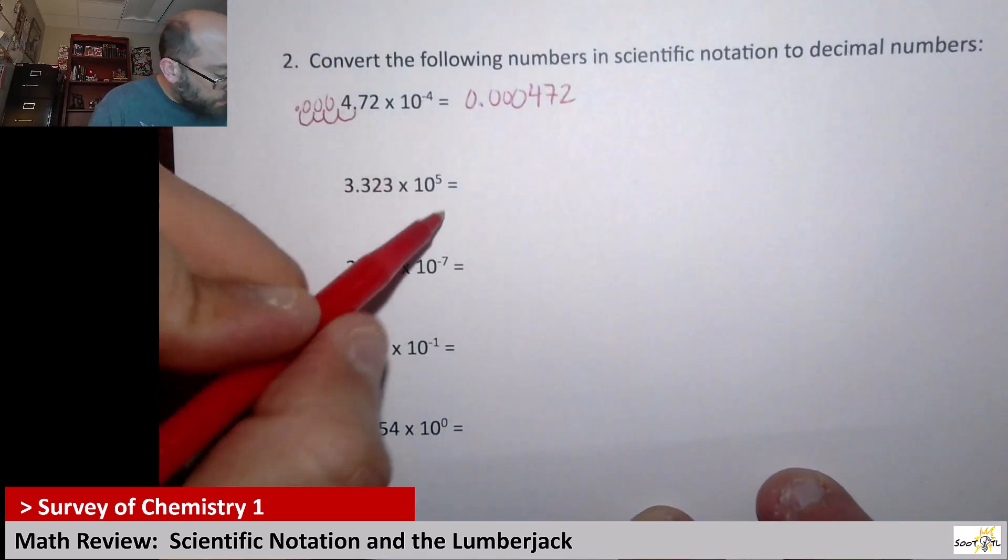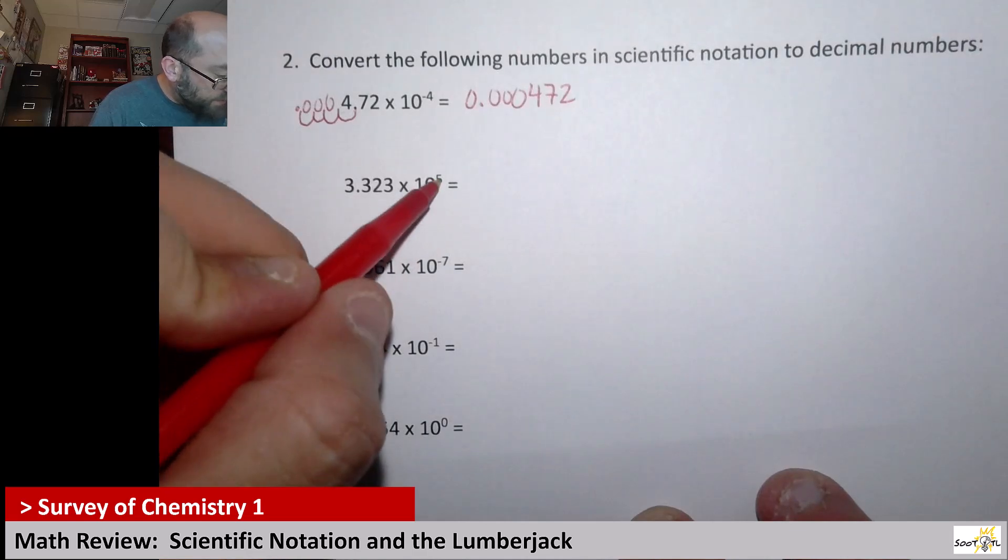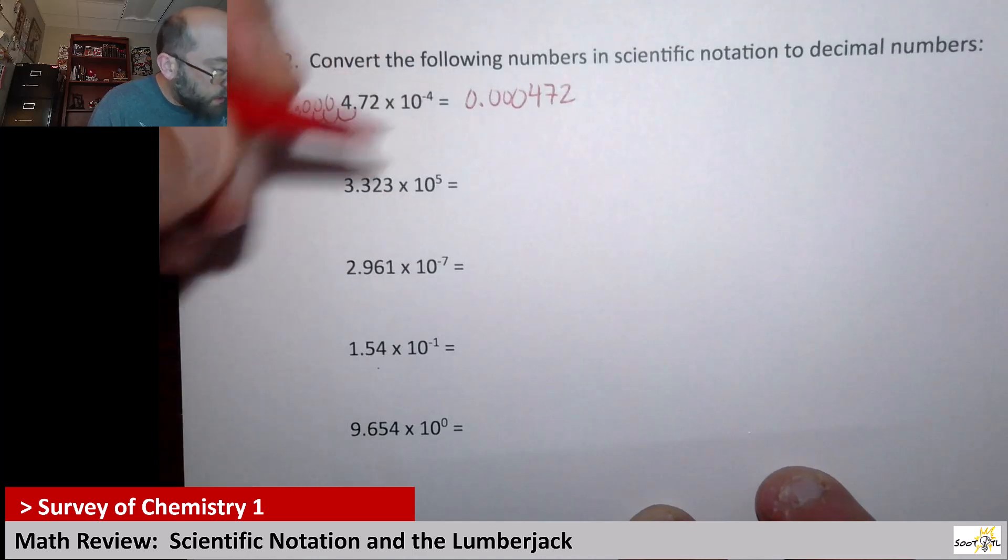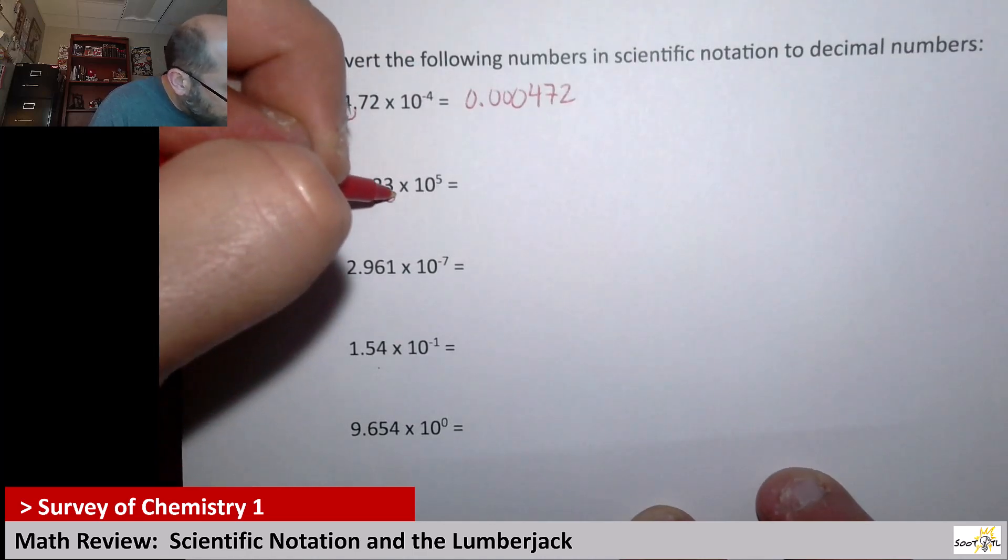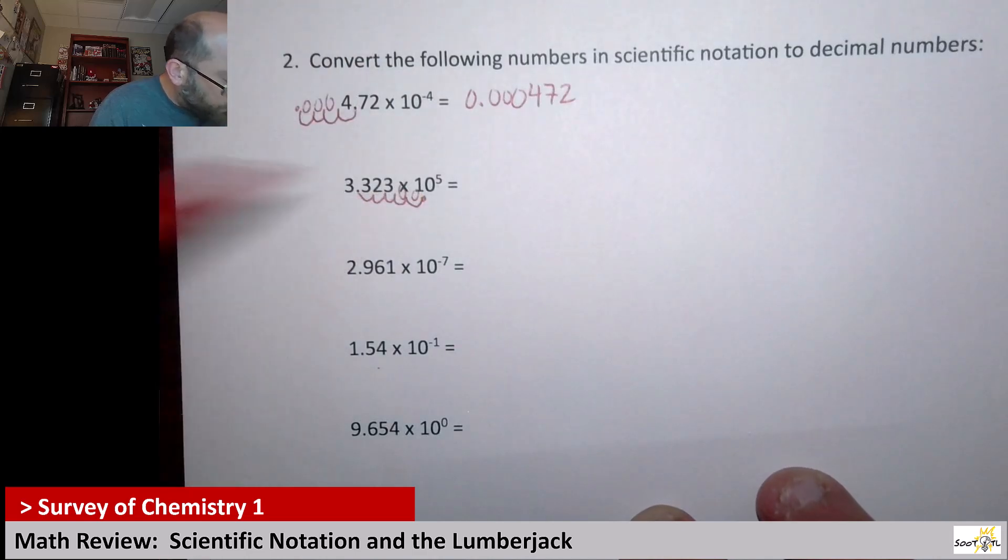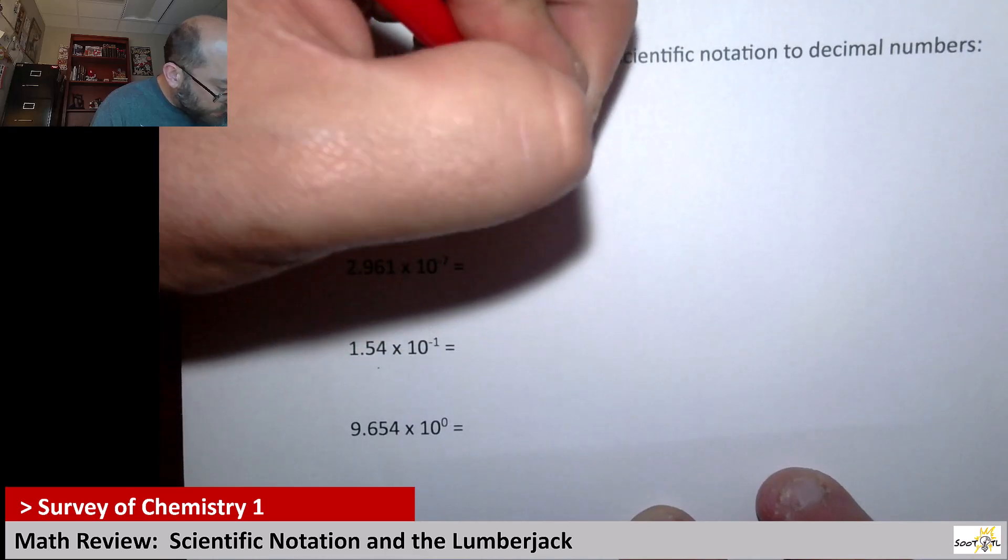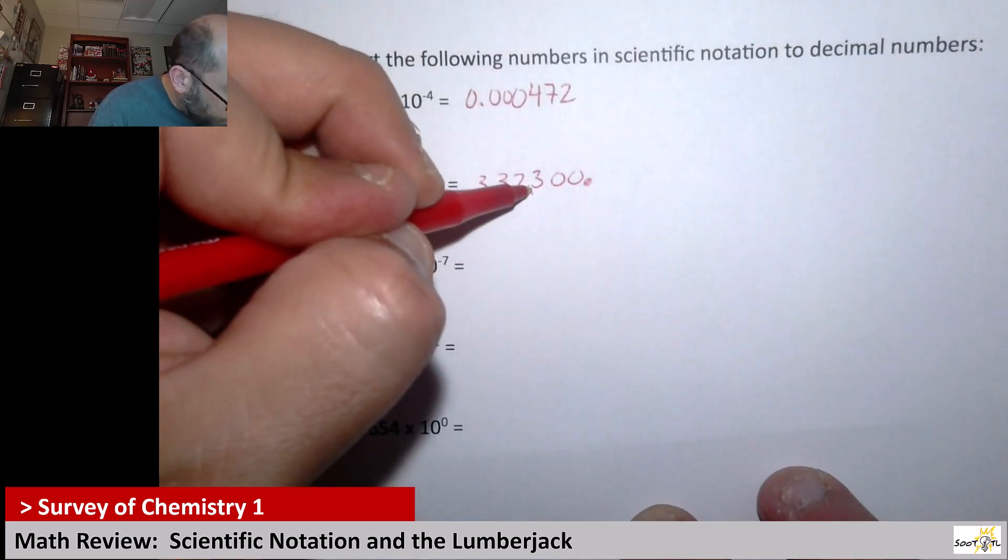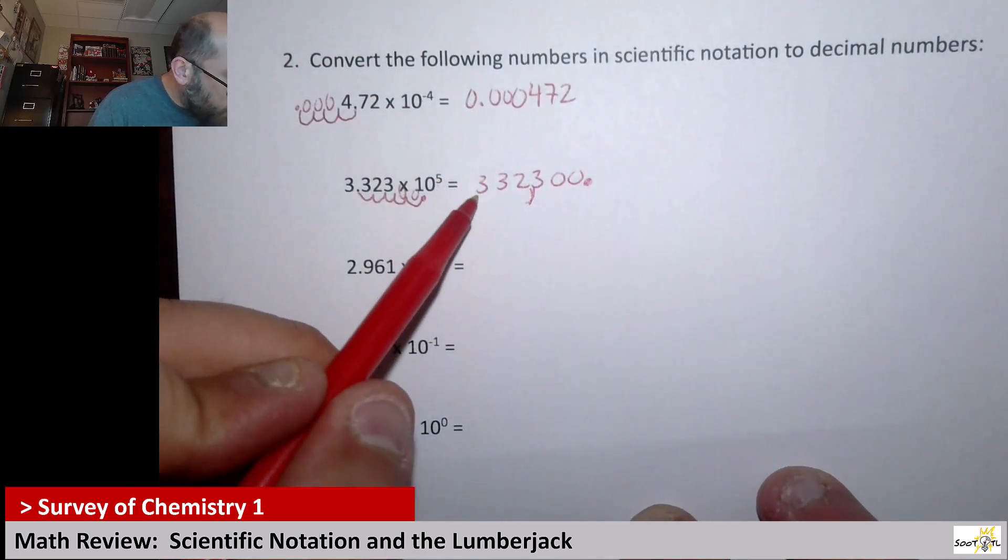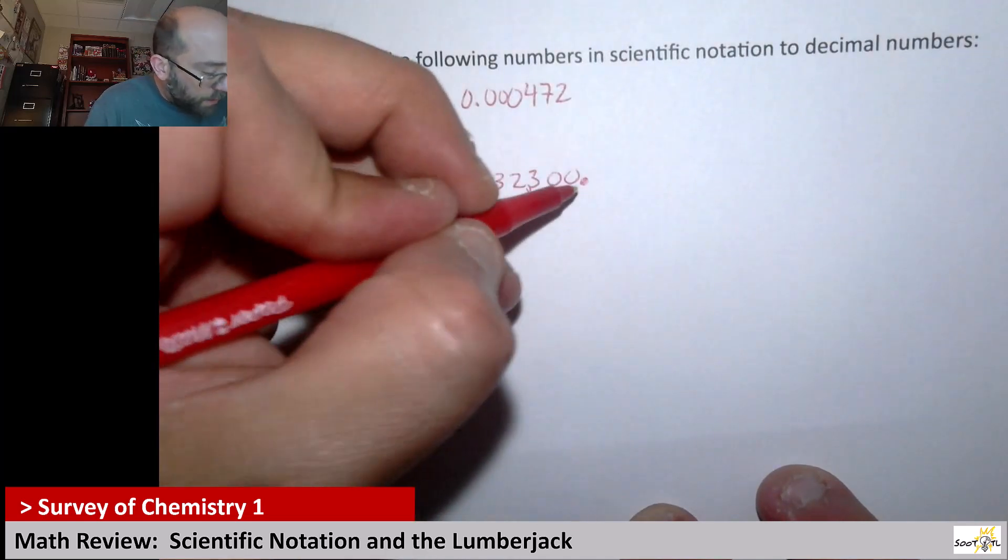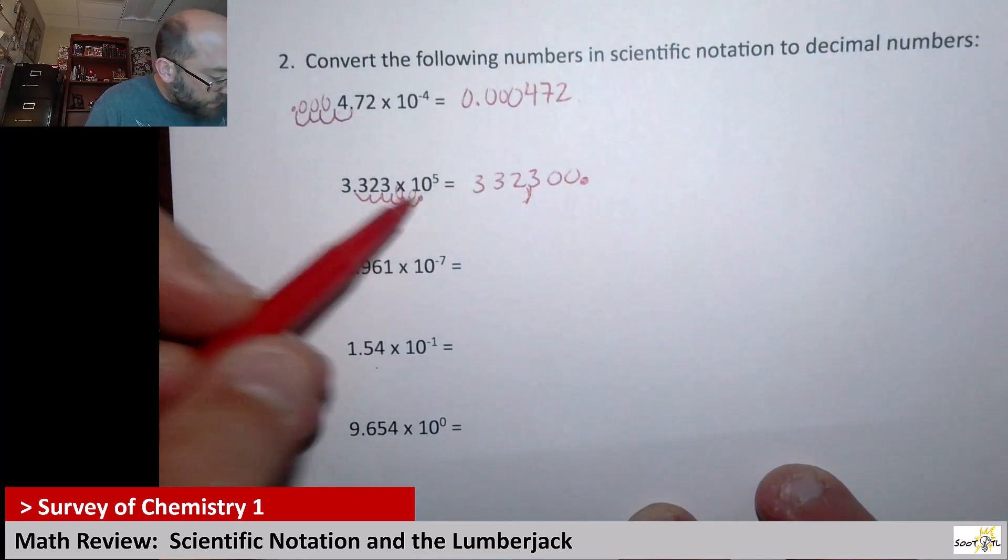Next up, this one is 10 to the 5. So this number is huge. A lot bigger than 1. So I need to go 1, 2, 3, 4, 5. So there's going to be these two zeros after the 3. So it's going to be 3, 3, 2, 3, 0, 0, and then there's my decimal point. So just to make it kind of easy to read, that tells us that this is 332,300. I'm just putting the decimal point there so you can see where it stopped.